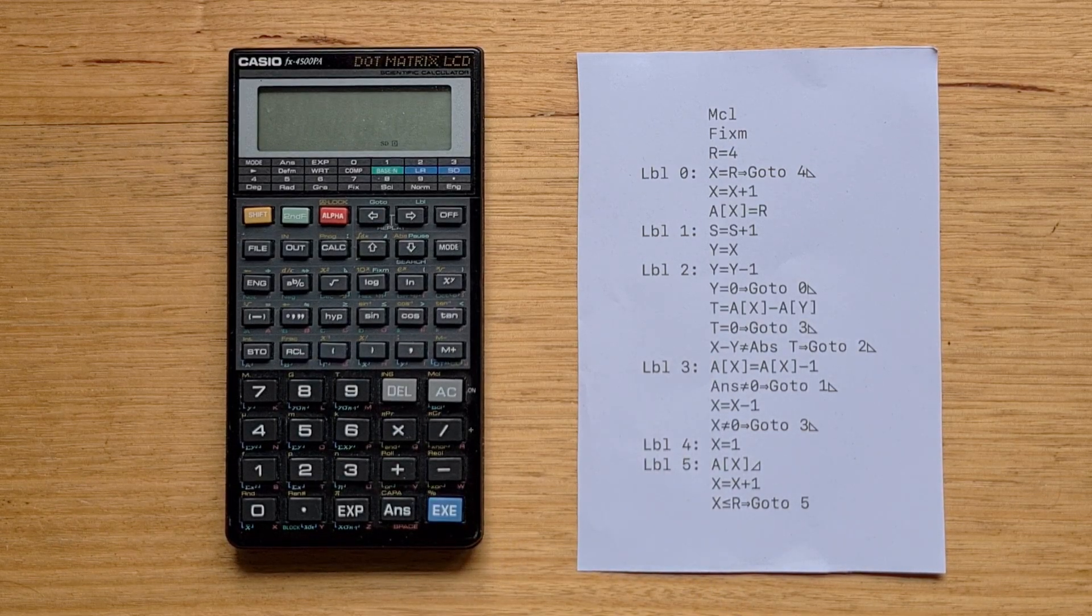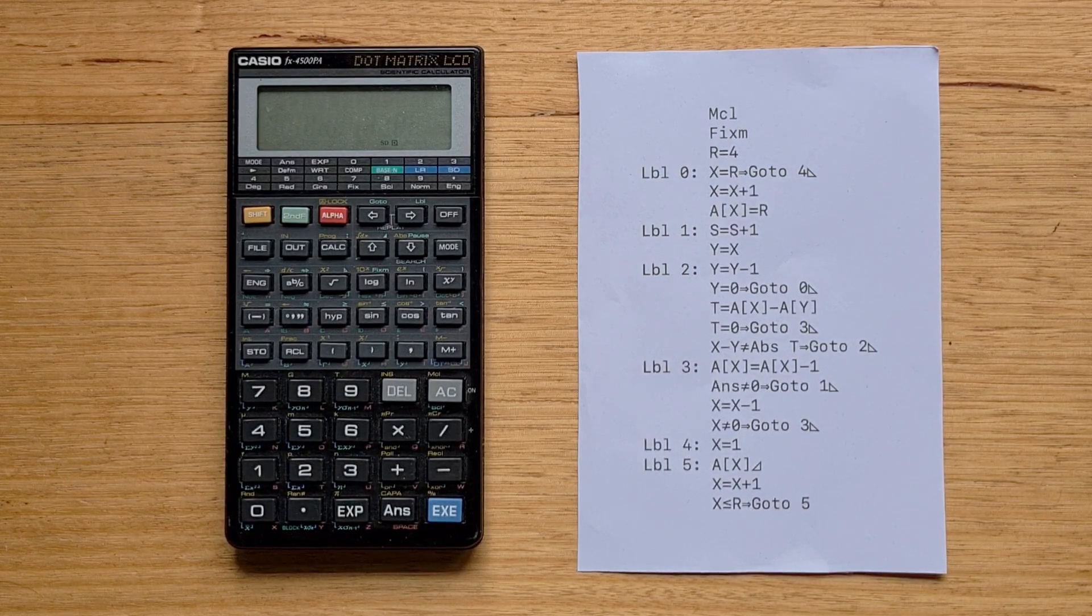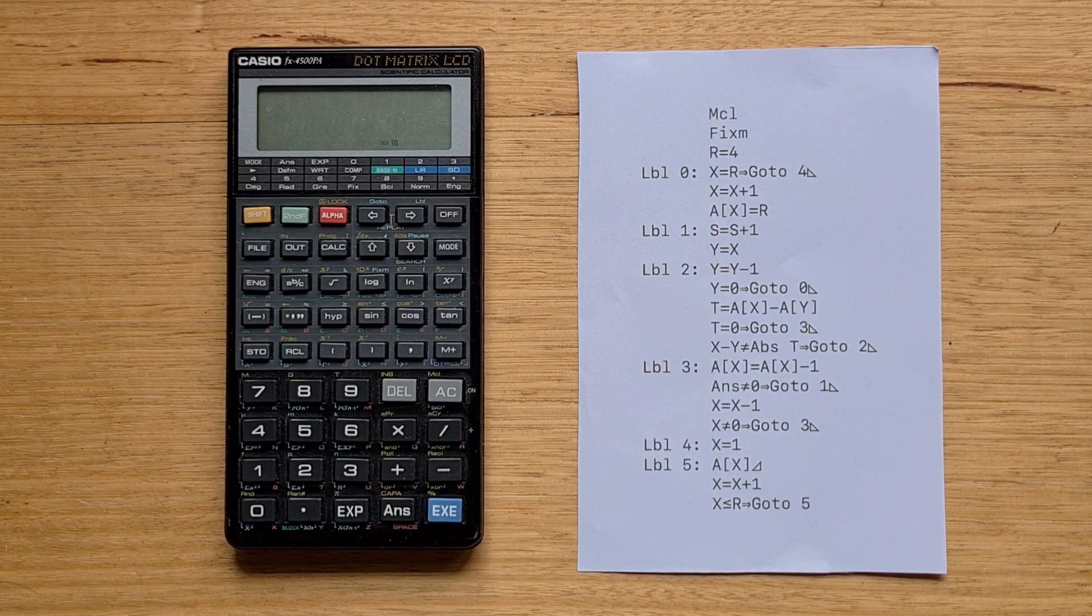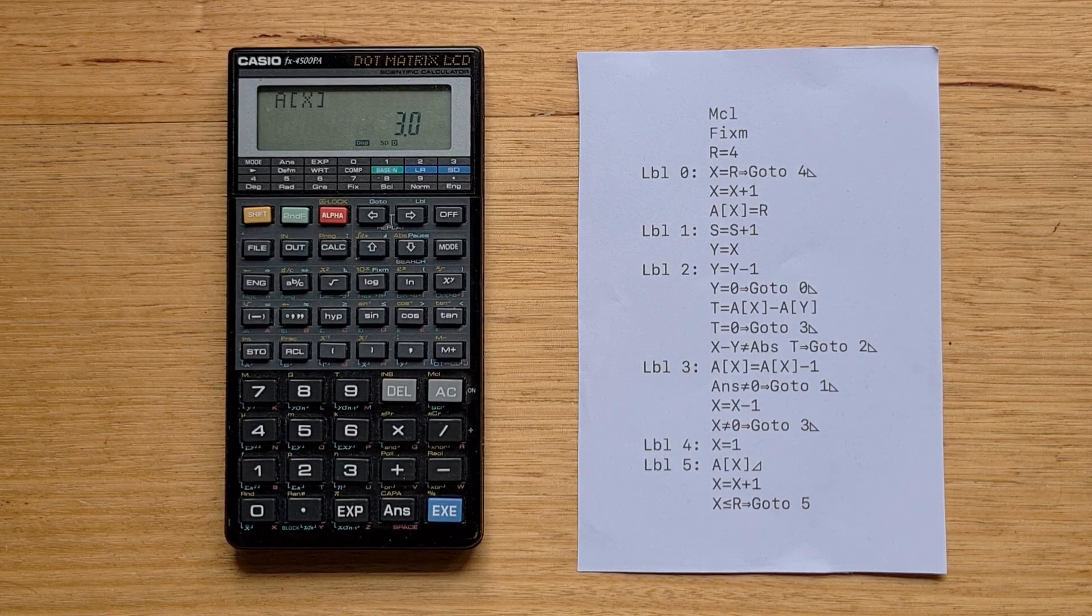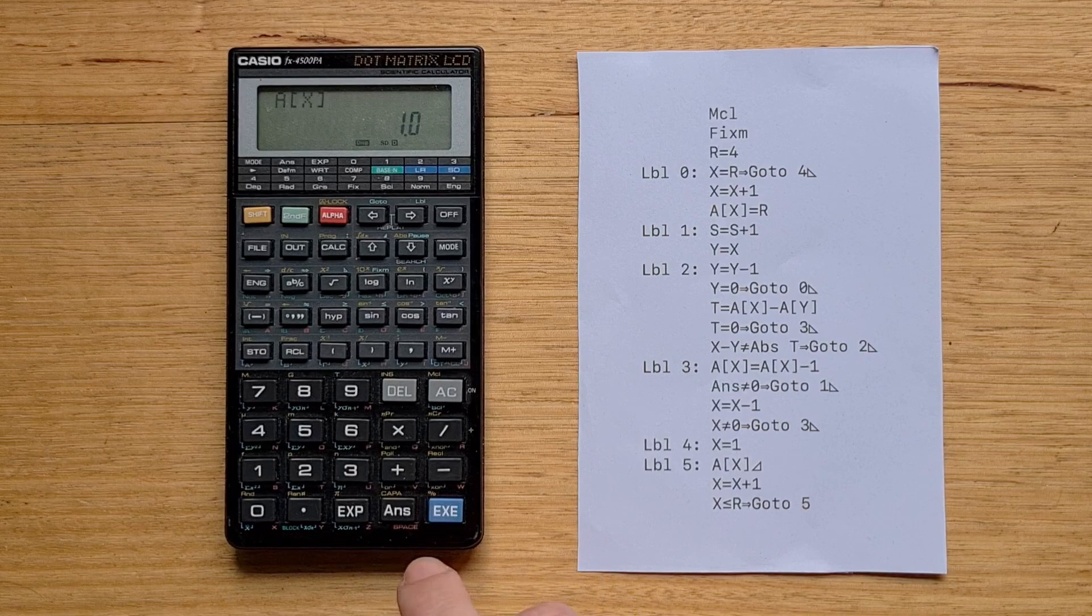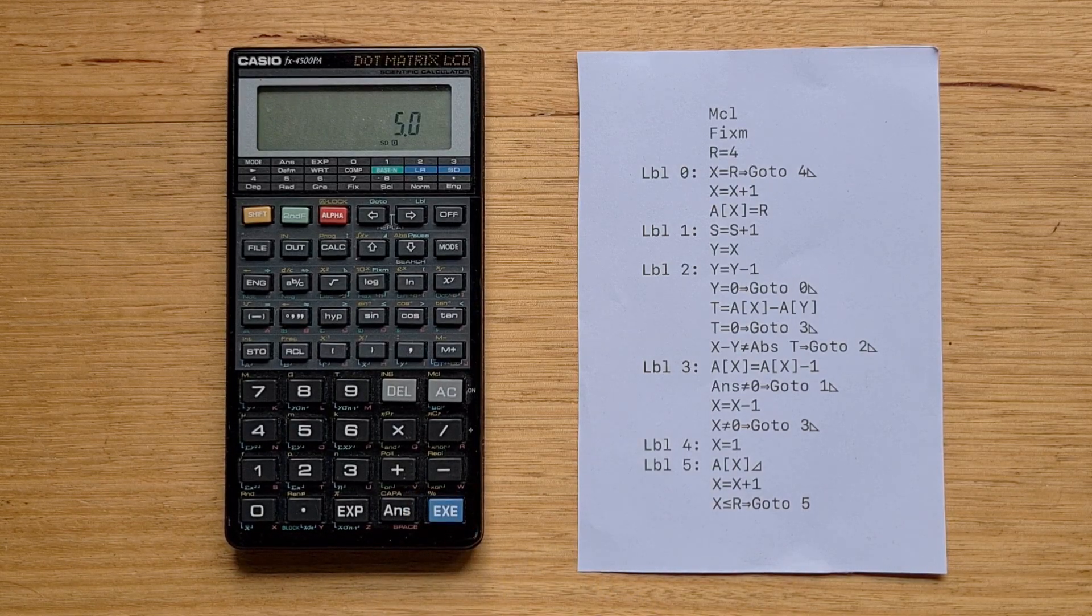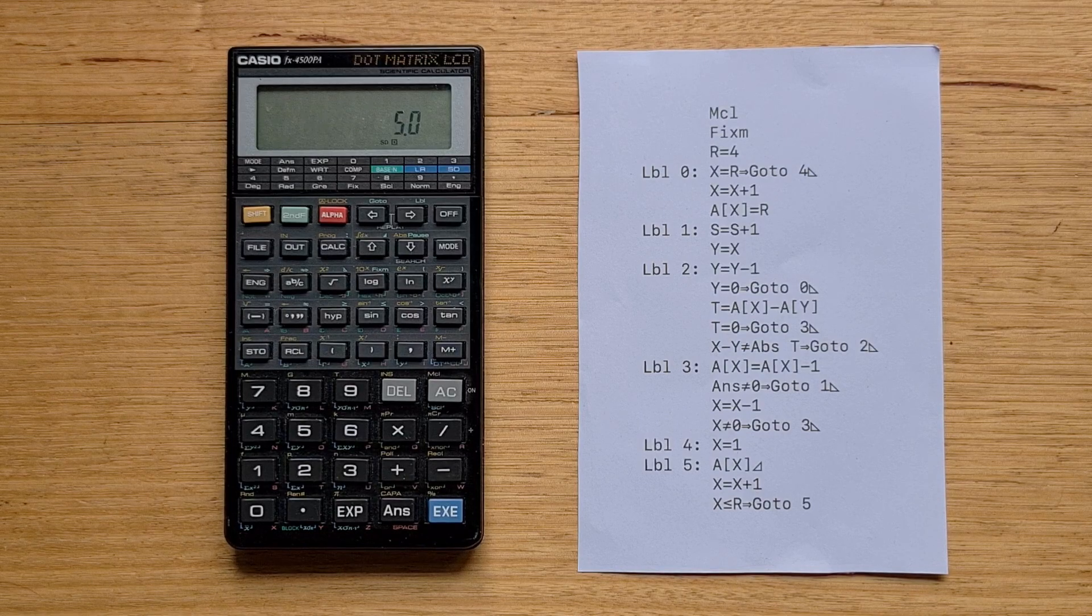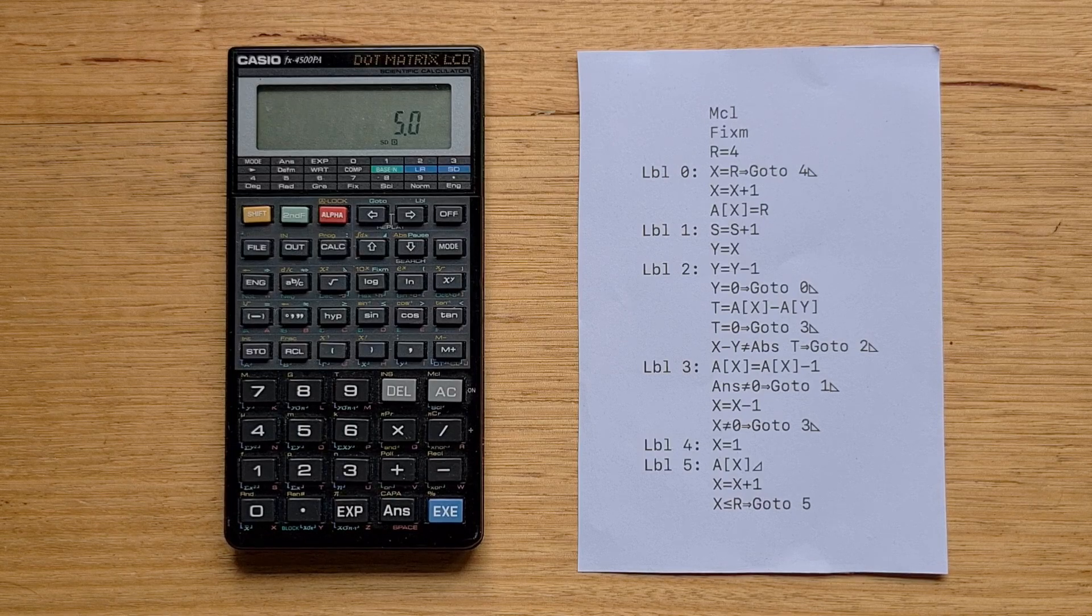Casio also dropped the handy increment or decrement and test functions from previous models. This version of n queens only has n set to four, and we'll run it now. For some reason, the 4500P went backwards in speed compared to the 4000P. For eight queens, the 4500P takes a whopping 20 minutes, approximately four times slower than the 4000. Even for four queens, it takes about 17 seconds to find a solution. That's queens on rows 3, 1, 4, and 2, which sounds correct.